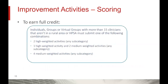For most groups to earn full credit — meaning you are not in a designated special group, and you are an individual group or virtual group with 15 or more clinicians not in a rural area or a HPSA — you should submit one of the following combinations to receive the full 40 points: two high-weighted activities in any subcategory (each worth 20 points), one high-weighted activity and two medium-weighted activities in any subcategory, or four different medium-weighted activities valued at 10 points each.